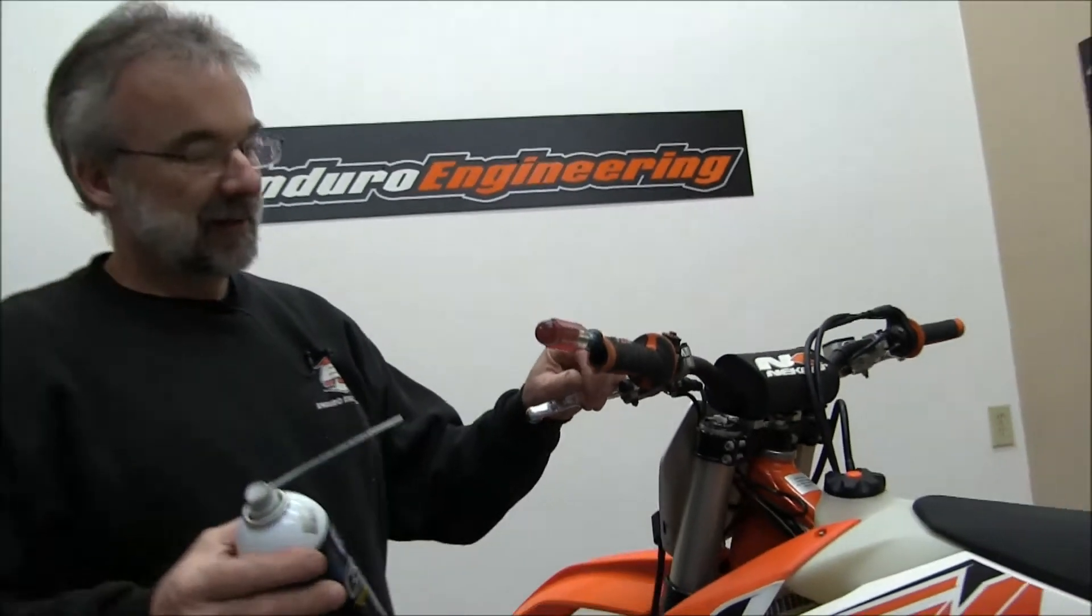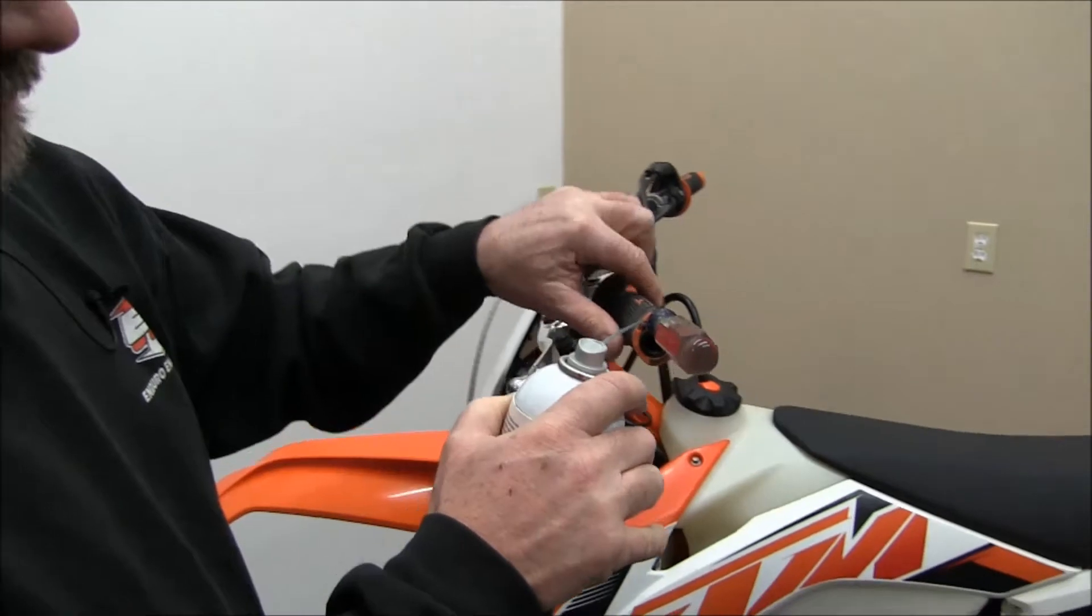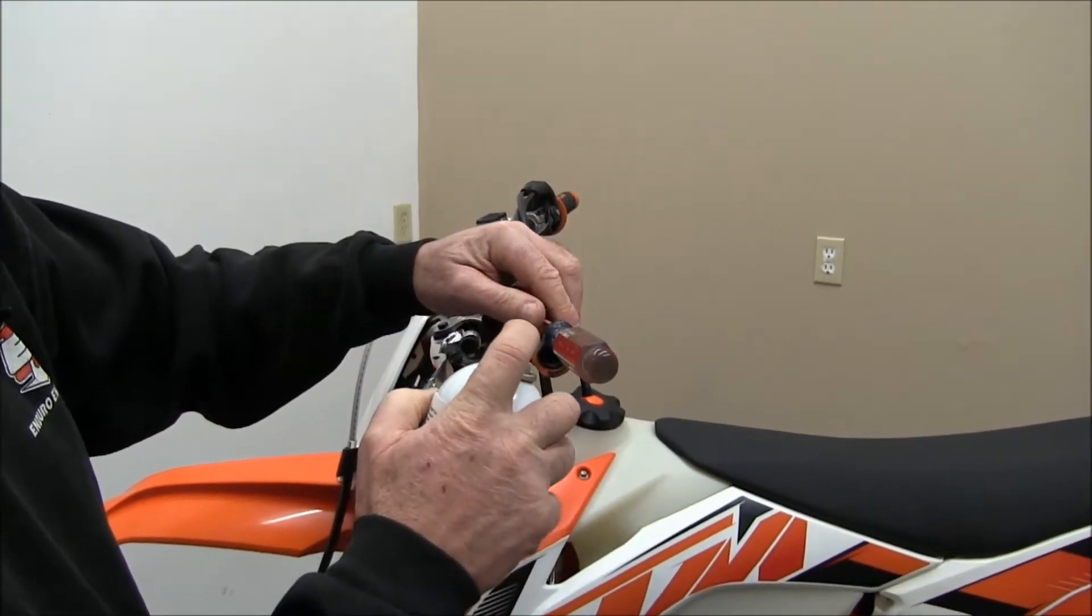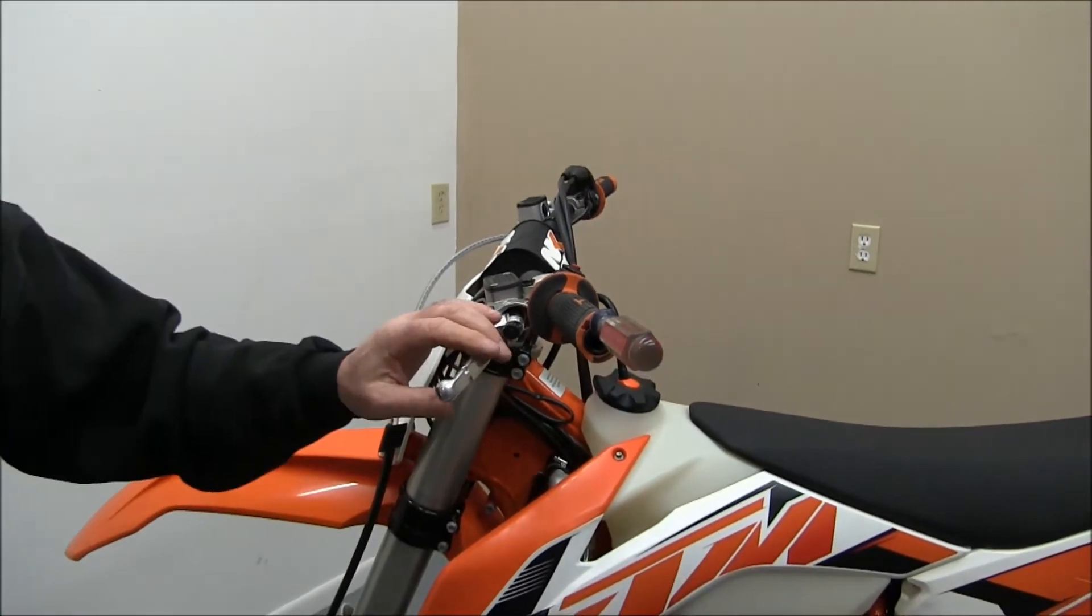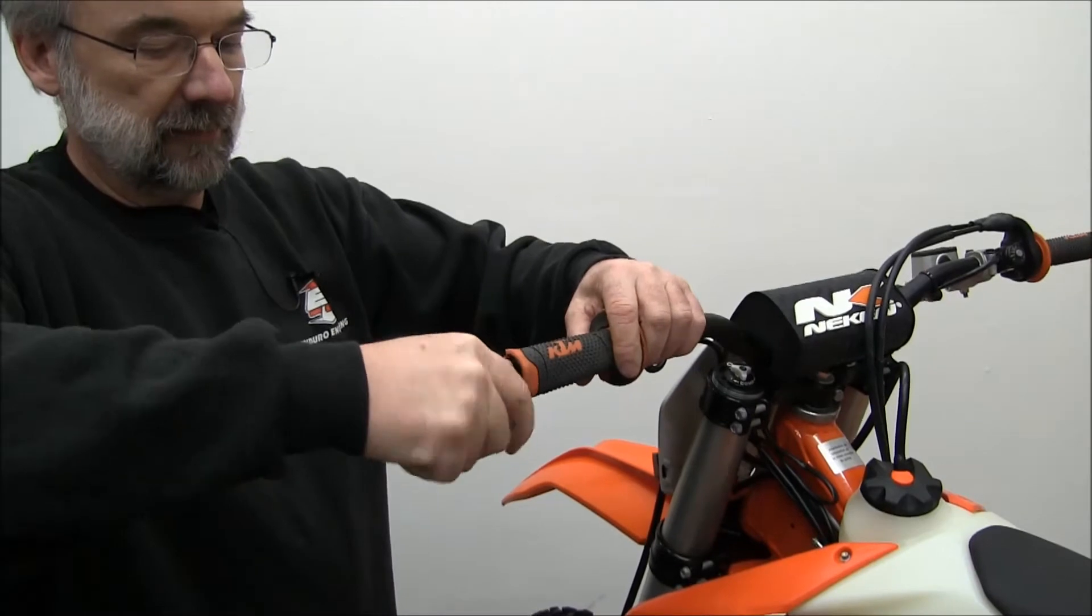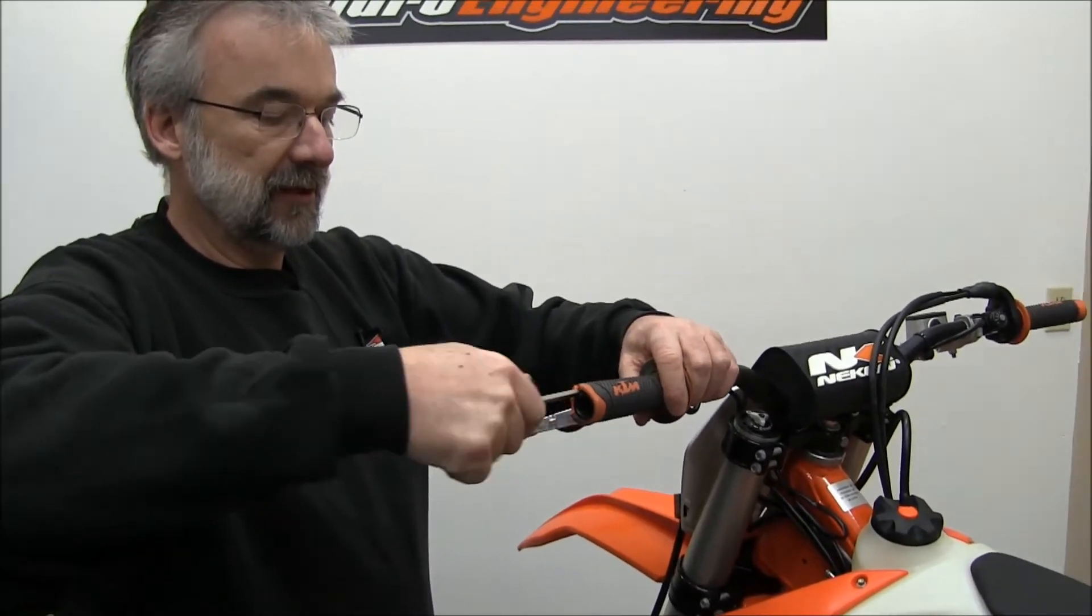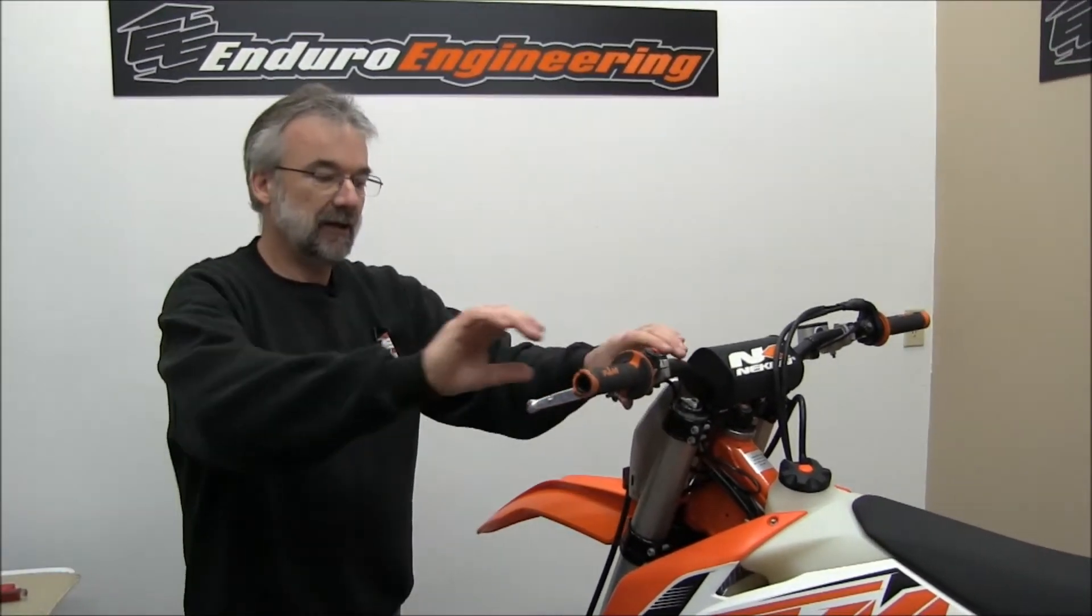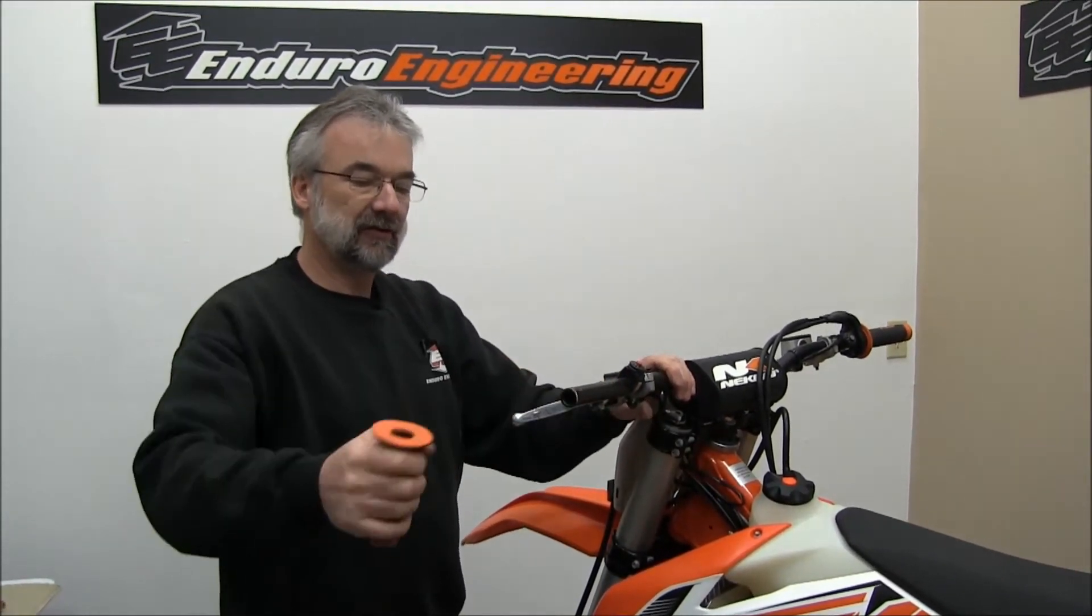Then take a lubricant like WD-40 or 6-in-1, shoot in between the actual grip and the handlebar just a little bit. Doesn't take a lot. Move the screwdriver around a little. It'll actually allow the lubricant to get all the way around the handlebar. Usually that'll be enough to break the bond and you can just slide the grip off.